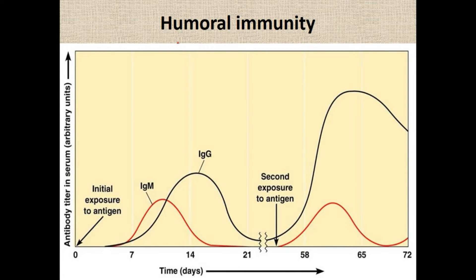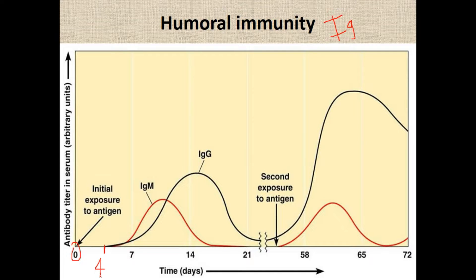Humoral immunity is also known as immunoglobulin mediated immunity, mediated by B lymphocytes. B lymphocytes give rise to plasma cells, which release different types of immunoglobulins. Whenever an antigen enters the body, that is day zero — the latent period. From day zero to around day four to five, the first response is IgM and the second response is IgG. This phase of zero to four days is considered the negative phase or latent period.